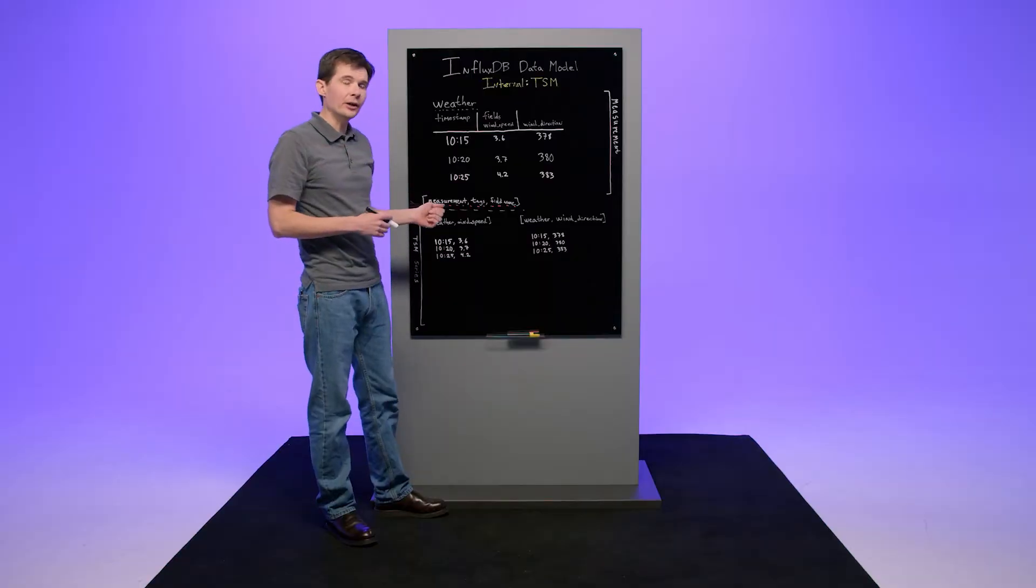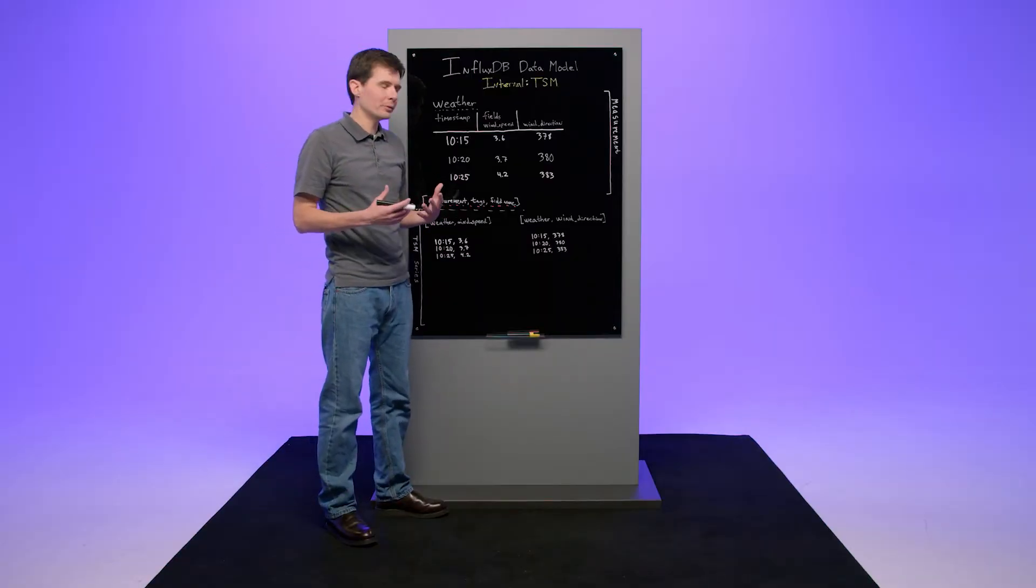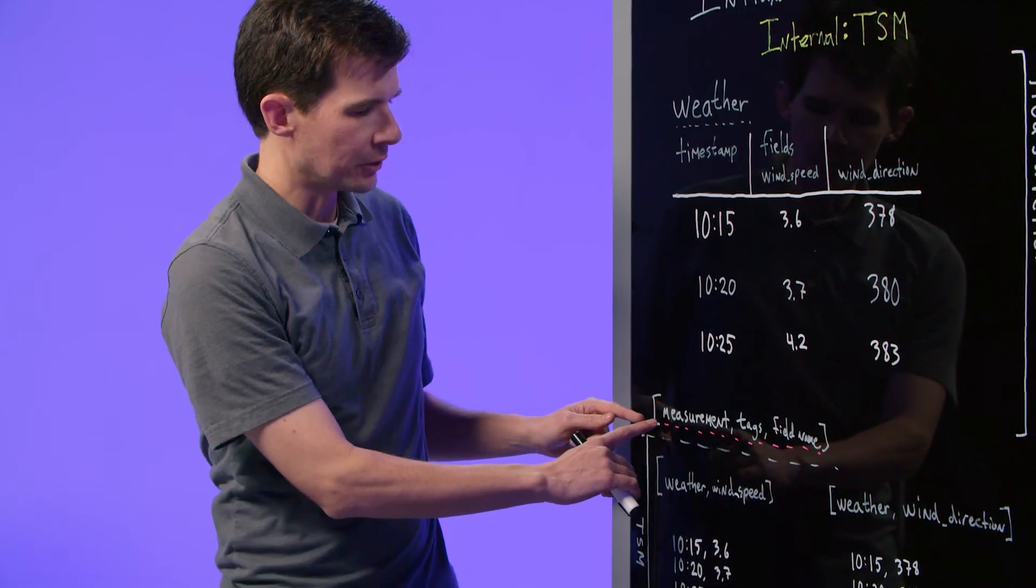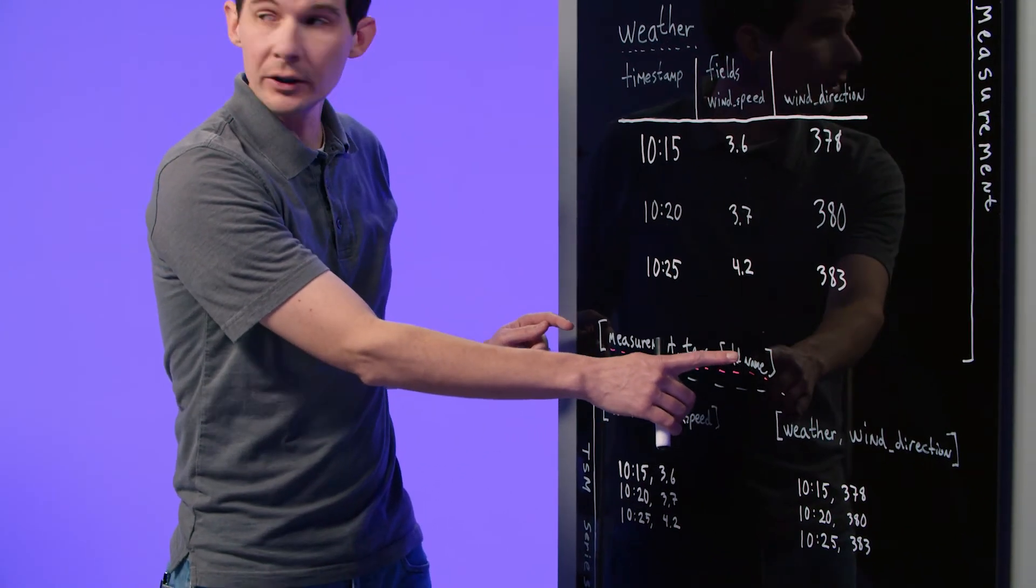First, we'll identify our series by a key. The rule to build a key is measurement name, tags, and then field name.